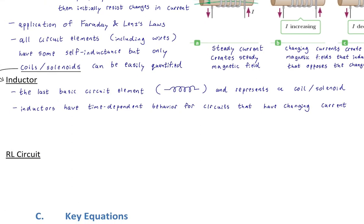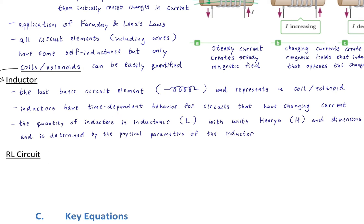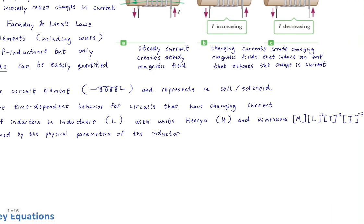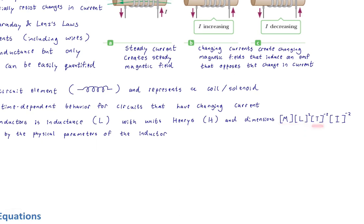Inductors have time-dependent behavior for circuits with changing current. The quantity of inductors is inductance — just like resistors have resistance and capacitors have capacitance. Inductance is a derived unit represented by uppercase L, and its unit is the Henry, represented by uppercase H. The dimensions are mass times length squared times time to the negative two times current to the negative two. It's a brand new unit named after the American physicist Henry.